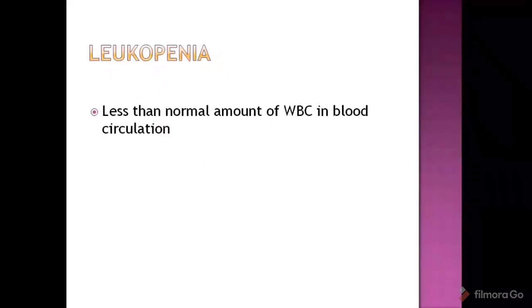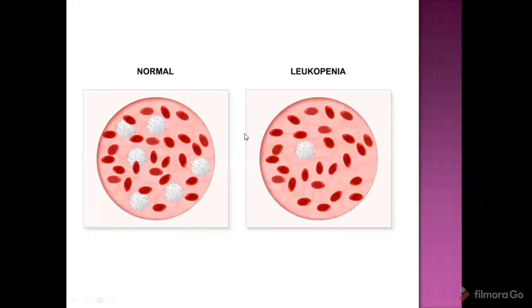Next one: leukopenia. Leukopenia is a less than normal count of WBC in the blood circulation. On the left side there is normal blood, and in leukopenia the WBC count is lower than normal. The image shows red blood cells and white blood cells, illustrating the reduced WBC condition.